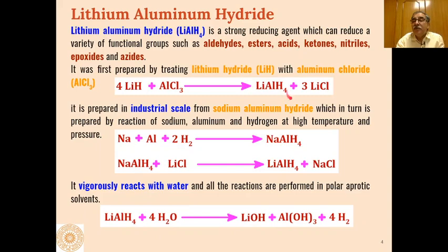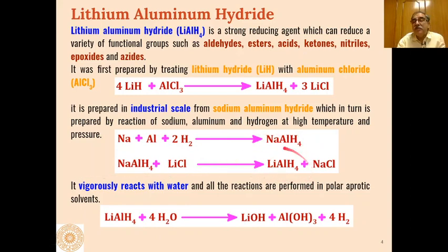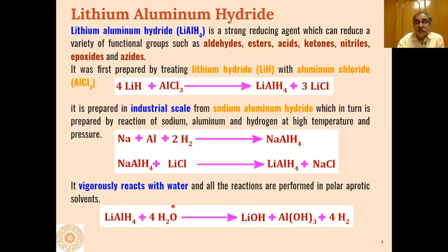On an industrial scale, LAH is prepared from sodium aluminum hydride: sodium metal reacts with aluminum metal under hydrogenation to give sodium aluminum hydride, which on reaction with lithium chloride gives lithium aluminum hydride. Importantly, LAH must be used only under anhydrous conditions because it reacts violently with water to give lithium hydroxide, aluminum hydroxide, and hydrogen gas. Therefore all LAH reactions are performed in polar aprotic anhydrous solvents.